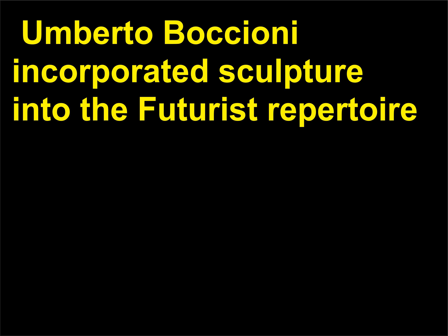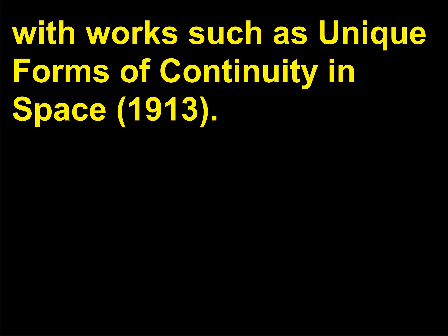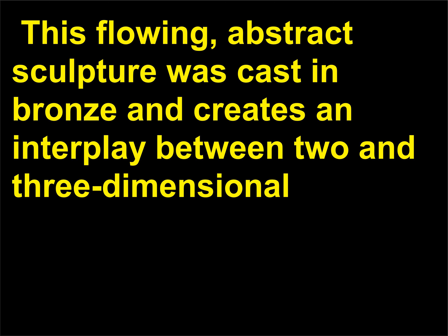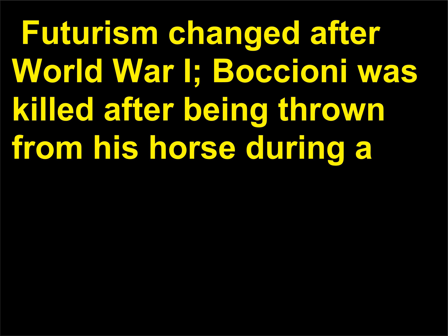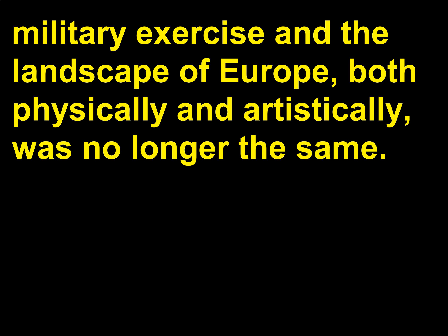Umberto Boccioni incorporated sculpture into the Futurist repertoire with works such as Unique Forms of Continuity in Space (1913). This flowing abstract sculpture was cast in bronze and creates an interplay between two- and three-dimensional space as a formidable figure with outstretched legs and no arms strides forward on a horizontal plane. Futurism changed after World War I — Boccioni was killed after being thrown from his horse during a military exercise, and the landscape of Europe, both physically and artistically, was no longer the same.